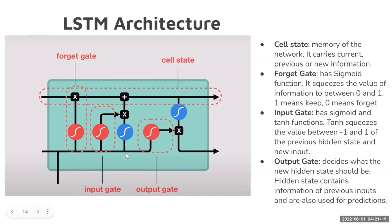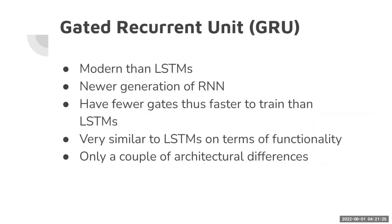LSTM also has an improvement over it, which is GRU — Gated Recurrent Units — which are a new generation of RNNs. They have fewer gates, so they are faster to train than LSTMs. As their functionality is very similar to LSTMs, you have quite nothing to lose and a lot to gain, because it will be easier and faster to train the model.